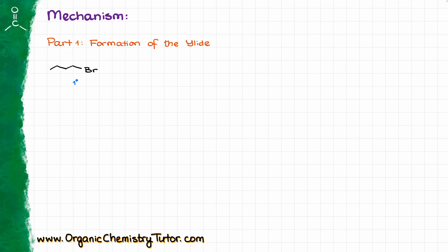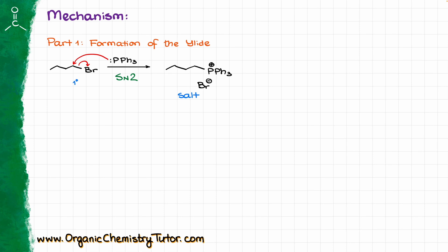We are going to react that with triphenylphosphine, which is an excellent nucleophile. The electron pair on the phosphorus can do an SN2 attack on our alkyl halide, displacing the bromine and making a new carbon-phosphorus bond. Since this is an SN2 reaction, we are going to be somewhat sensitive to steric hindrance. With a primary alkyl halide, we typically won't have any trouble, but with a secondary alkyl halide the reaction is not as smooth, and with tertiary alkyl halides we are not going to get any appreciable quantity of our salt.